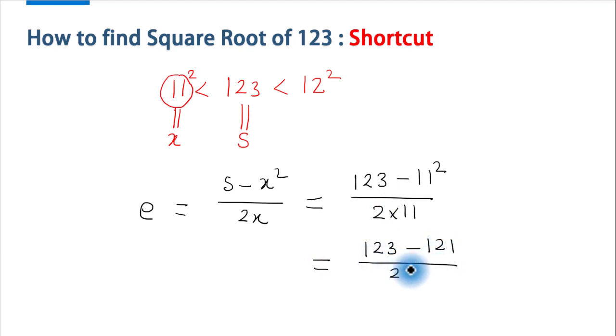Which is equal to 2 upon 2 times 11. Here we can cancel 2 from numerator and denominator.